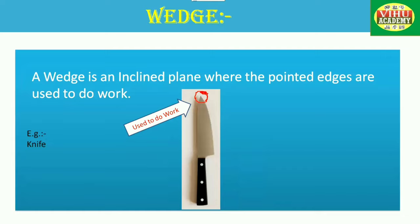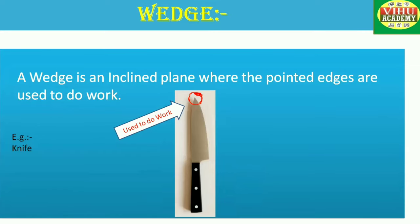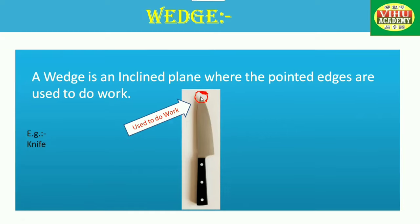A wedge is an inclined plane where the pointed edges are used to do the work. Examples of wedges include shovel, knife, axe, needle, etc. The pointed edge, which you can see circled in red here, is used to do the work of cutting objects like vegetables.